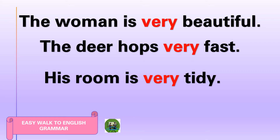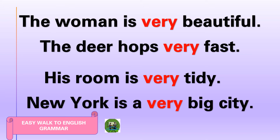More examples of 'very': 'His room is very tidy' — 'tidy' is an adjective and 'very' is placed before it. 'New York is a very big city' — 'big city' is a noun phrase serving as a complement, and 'very' is placed just before it. If you would like to know more about complements, there are videos in our channel dealing with subjects, predicates, complements, objects, and prepositional objects.